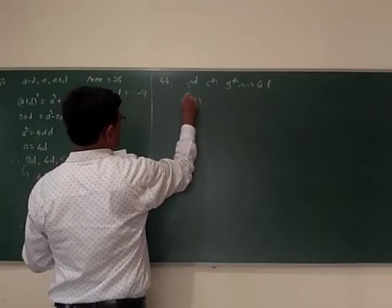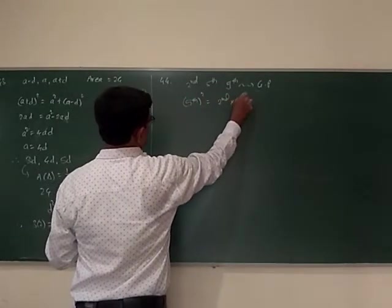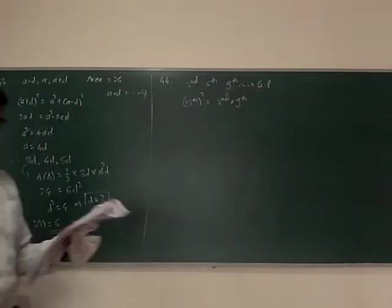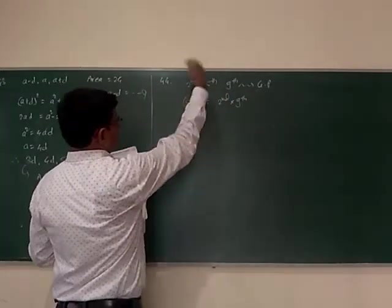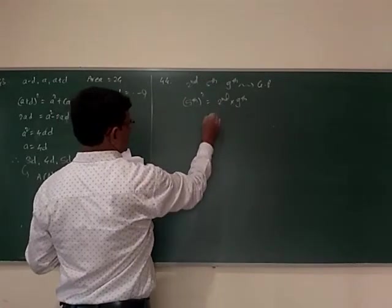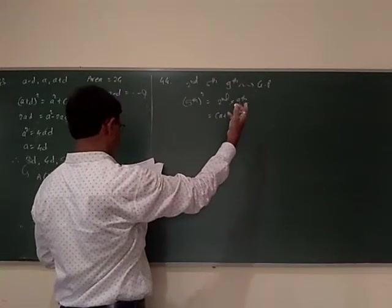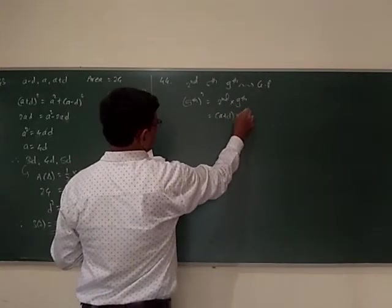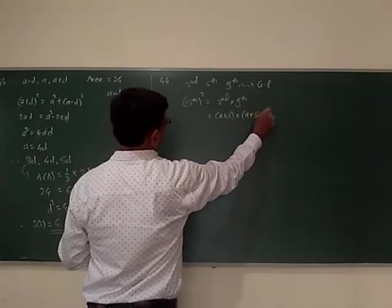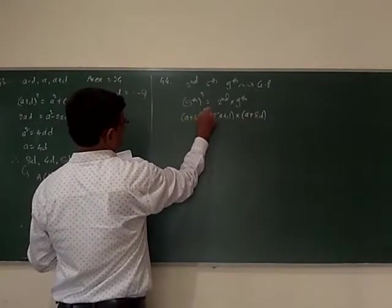So the 5th term squared is equal to 2nd term into 9th term. Now, the 2nd term of the arithmetic progression is A plus D, and the 5th term is A plus 4D squared.